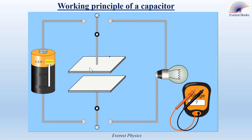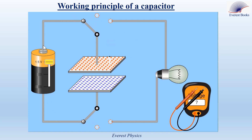Observe what will happen when we connect the upper plate of the capacitor to the positive pole of the battery and the lower plate to the negative pole using this switch. We observe that the upper plate loses a certain number of electrons while the lower plate gains the same number of electrons, because the positive pole of the battery attracts free electrons from the upper plate. The upper plate becomes positively charged and the lower plate becomes negatively charged. This phenomenon is called the charging of the capacitor.